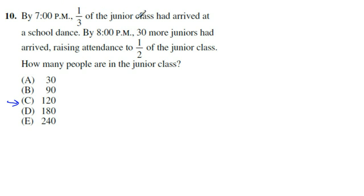By 7 o'clock, one-third of the junior class had arrived. So in this case, one-third of 120 would be simply 40 students. Now we continue on here. Then it says, by 8 o'clock p.m., 30 more juniors had arrived. So if we add 30 more students, that's going to give us a total of 70 students. And it says, after that, half the junior class had arrived. In this case, is 70 half of 120? No. So it cannot be answer choice C.